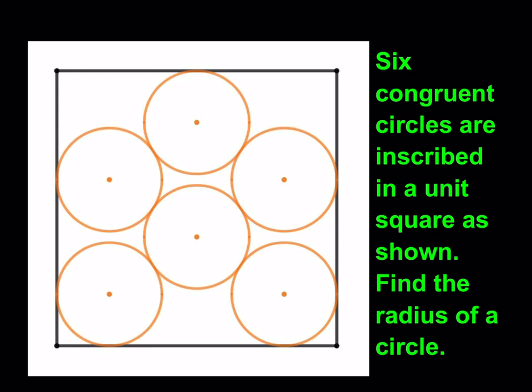Six congruent circles are inscribed in a unit square as shown. Find the radius of a circle. Since they're all congruent, we're just going to find the radius of one of the circles. So this problem you may have seen before because it's not very uncommon and I'll try to include some links in the description down below. So we're going to start by making some connections as always. Let's go ahead and make those connections.